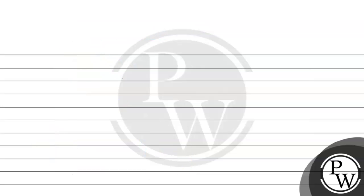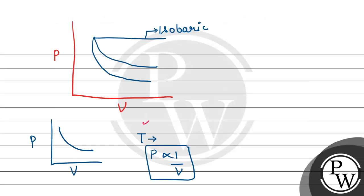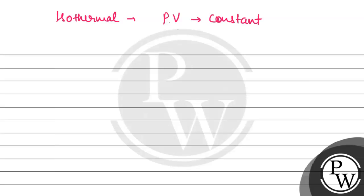Let us find the slope of the isothermal curve. For the isothermal process, PV equals constant, since pressure is inversely proportional to volume at constant temperature. Differentiating, the slope dp/dv for the isothermal process equals minus P upon V.